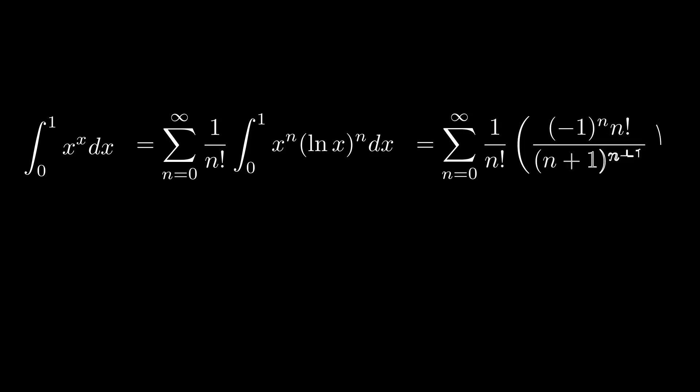And nice things happen. Effectively, the n factorials cancel out. We get this really adorable sum. You can start writing it out. And if you put this into a computer without using too many terms, you'll get a really nice approximation.